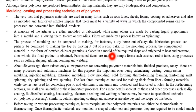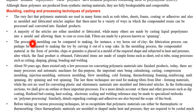In the molding process, the compounded material in the form of powder, chips, or granules is placed in a mold of the desired shape. When we place the material into the mold, the desired shape and size can be obtained, but for that, heat and pressure are required to be applied, and finally the product is obtained.